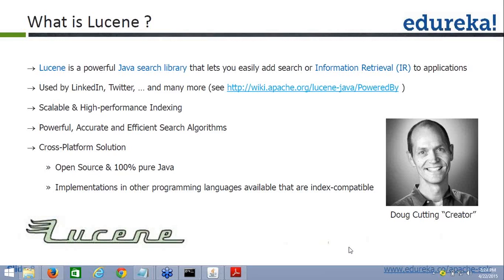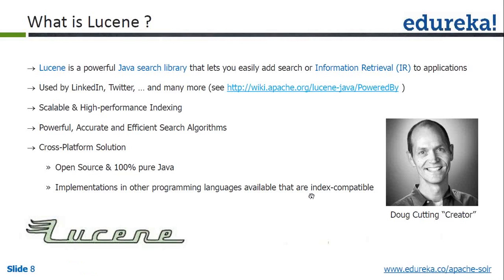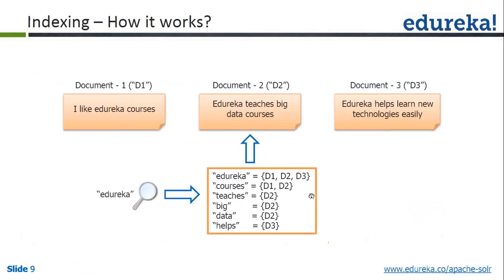Lucene lets you create powerful, accurate, and efficient search algorithms based on your needs. It is cross-platform, open source, and 100% pure Java — which is why it is supported on most platforms. You don't need to pay any licensing costs. Implementations are also available in other index-capable programming languages.